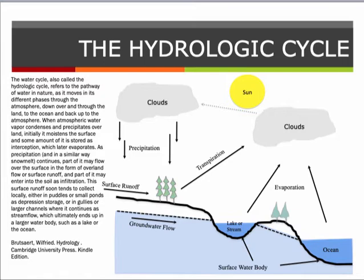When atmospheric water vapor condenses and precipitates over land, initially it moistens the surface and some amount of it is stored as interception, which later evaporates. As precipitation and snowmelt continue, part of it may flow over the surface as overland flow or surface runoff, and part of it may enter into the soil as infiltration.